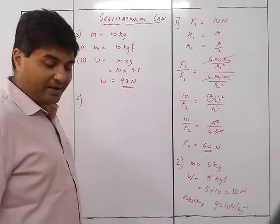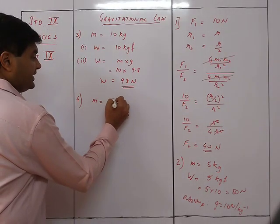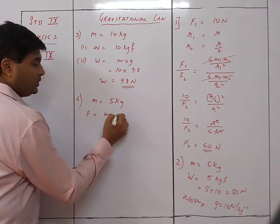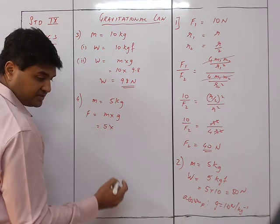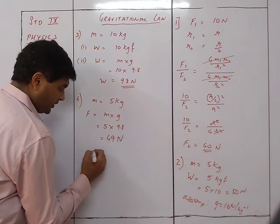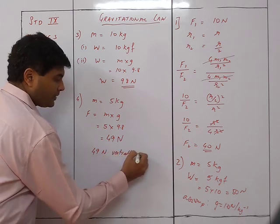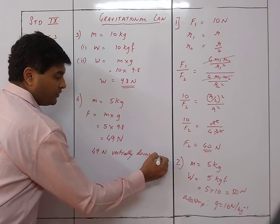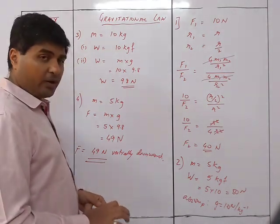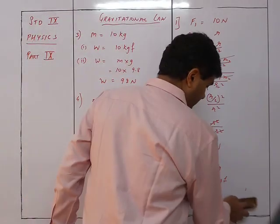Question 4: State the magnitude and direction of the force of gravity acting on a body of mass 5 kg. Mass = 5 kg, F = m·g = 5 × 9.8 = 49 newton. The force will be 49 newton acting vertically downwards.